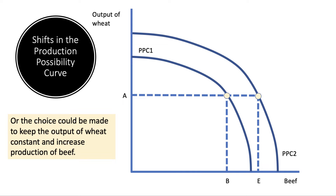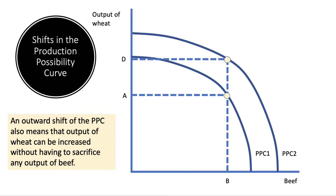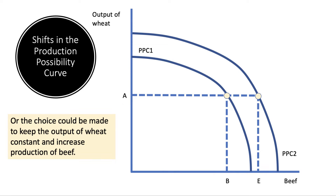We could keep the output of wheat constant. That choice allows us to increase our production of beef with no loss of output of wheat. There are many options in between those two extremes — either increase wheat production with no loss of beef, or increase beef production with no loss of wheat. That's the significance of the curve.